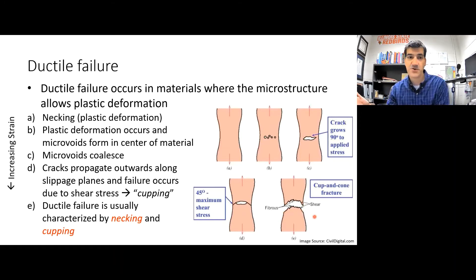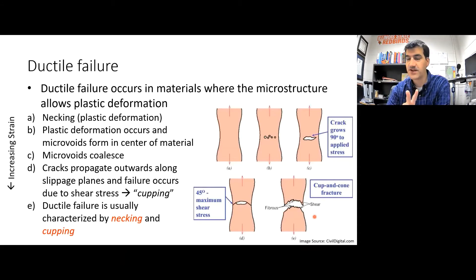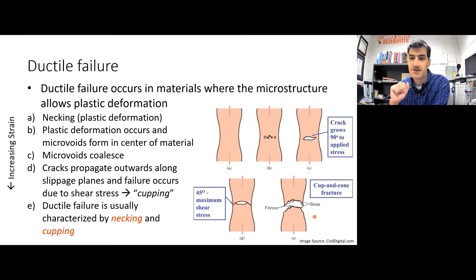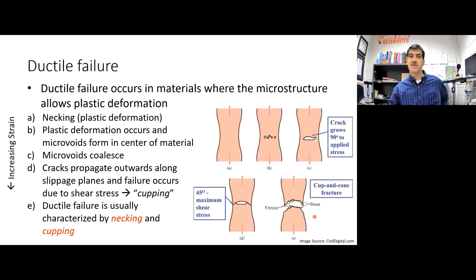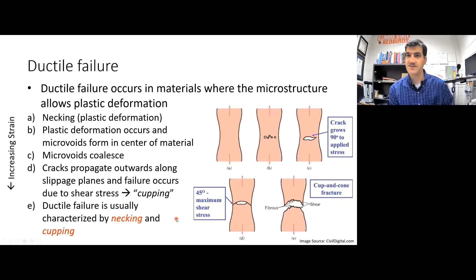I have some examples I'll show you in a few minutes after we talk about the different kinds of failure. Two things you should remember about ductile failure — how you know something has failed via ductile failure: one is necking, a localized reduction in cross-sectional area; number two is cup and cone failure. Those are two dead giveaways that something failed via ductile failure and not brittle failure.